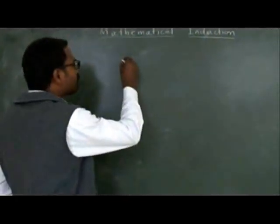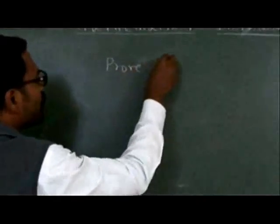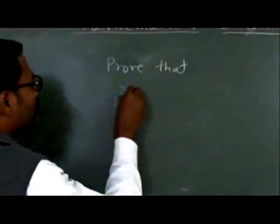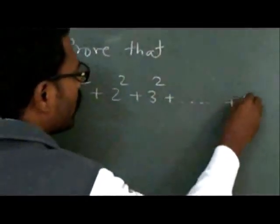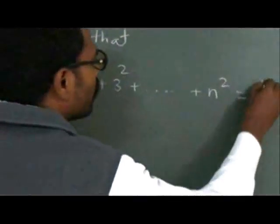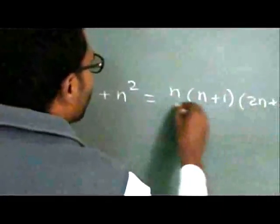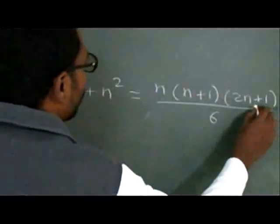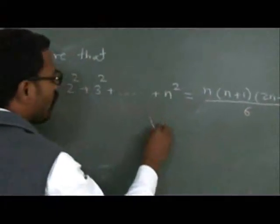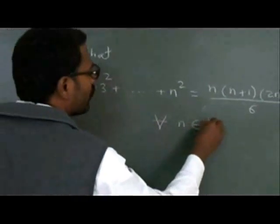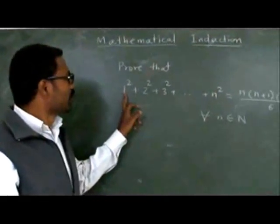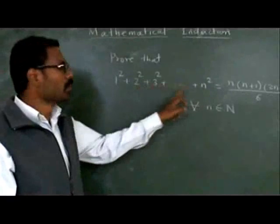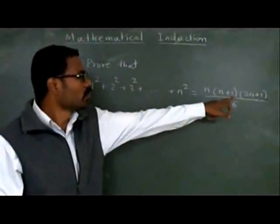Let's consider this problem: prove that 1 squared plus 2 squared plus 3 squared up to n squared is equal to n(n+1)(2n+1) divided by 6, for all n belonging to the natural numbers. We have to prove that the sum of squares of all natural numbers up to n equals n(n+1)(2n+1) upon 6.